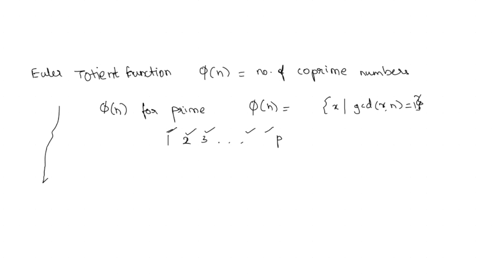When you have n to be a prime — say we call it p — then phi of any prime number p is p minus 1. This is the most simplest case.